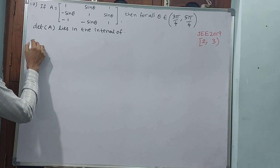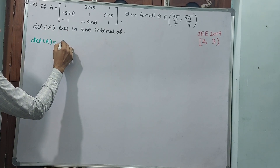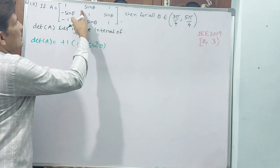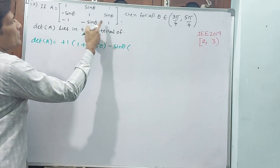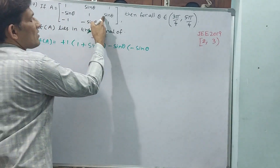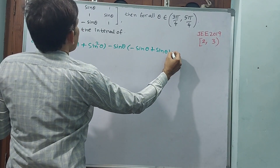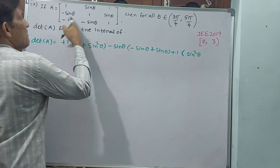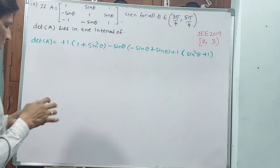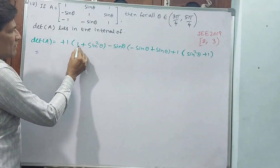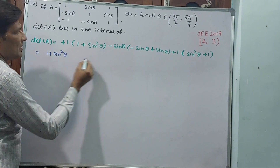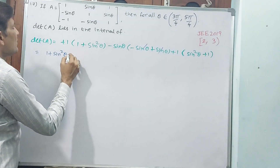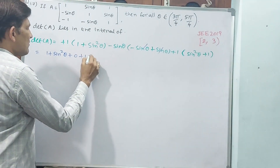Finding determinant A: expanding along the first row, we get 1·(1 − sin²θ) + sinθ·(sinθ − (−sinθ)) + (−1)·(sin²θ − 1). Working through the terms: −1 + sinθ + sinθ, and again plus 1 into minus into minus 2sin²θ, minus of minus 1 plus 1. This simplifies, with the centre term becoming 0, giving 1 + 2sin²θ, and again 1 + 2sin²θ — so we can take out 2(1 + sin²θ).